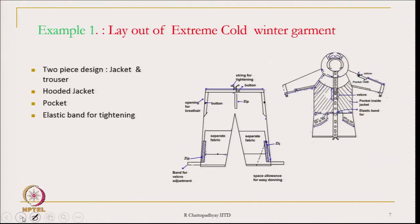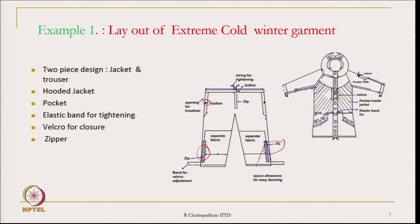Here is a layout of an extreme cold winter garment. You can see the list of items is given on the left-hand side and the sketches are given on the right-hand side. These sketches convey where the zip should be located, where buttons should be. Looking at it now, there has to be a button here, there is a zip over here — all these things which are part of the overall design are visible to other members of the team.